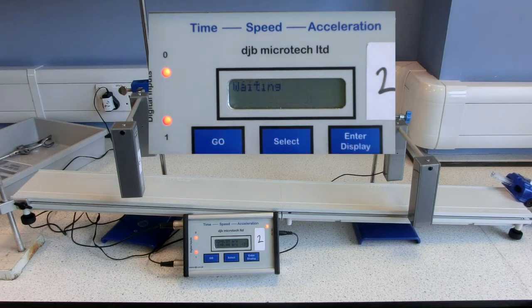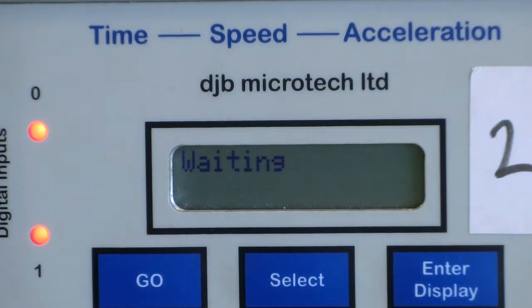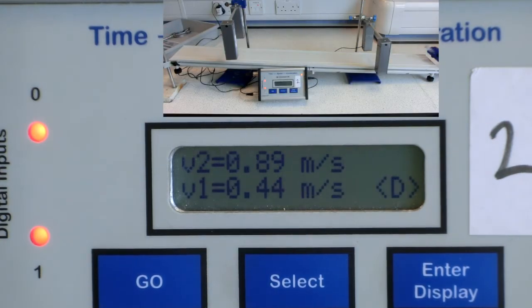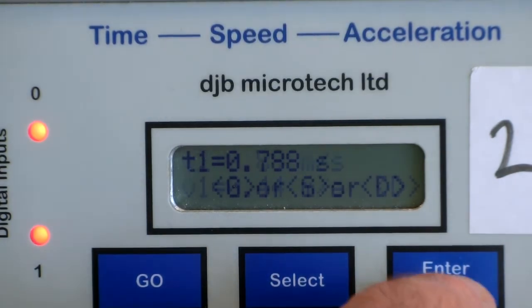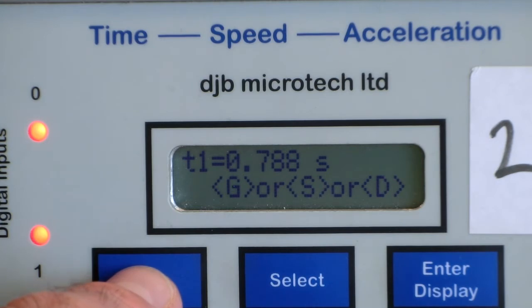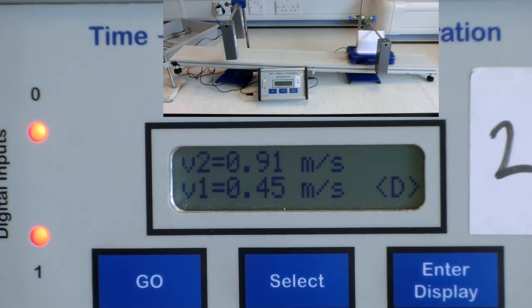The results are then collected for the initial speed v1 and the final speed v2. The time for change is also displayed.